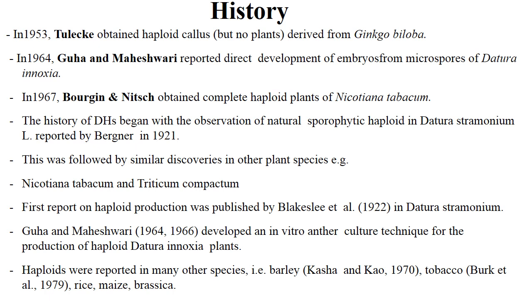The history of double haploids begins with the observation of natural sporophytic haploid in Datura stramonium reported by Bergner in 1921. This was followed by similar discoveries in other plant species like Nicotiana tabacum and Nicotiana compactum. The first report on haploid production was published by Blakeslee in 1922 in Datura stramonium. Guha and Maheshwari in 1964 and 1966 developed in vitro anther culture technique for the production of haploid Datura inoxia plants.